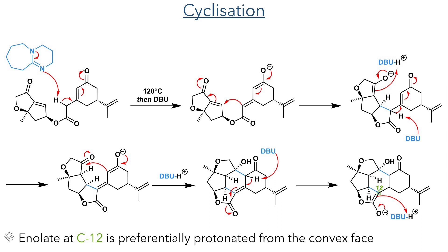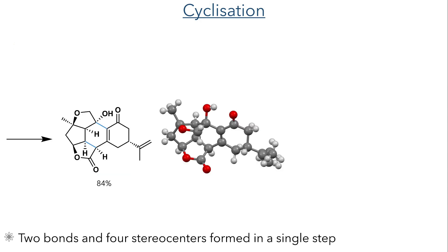The proton present in this ring, alpha to the ketone, is then deprotonated by DBU, and the resulting conjugate enolate is then reprotonated at carbon-12. This protonation preferentially happens on the less sterically hindered convex face of the molecule. This cyclisation reaction is rather extraordinary, as it formed two new rings and set the stereochemistry of four stereocentres all in a single step, forming the product in an 84% yield as a single isomer.